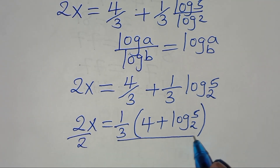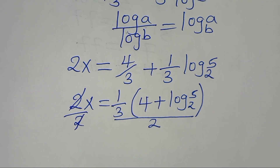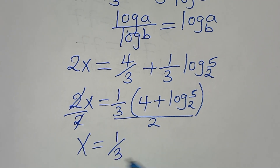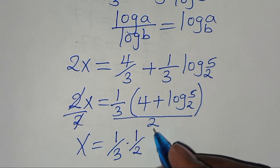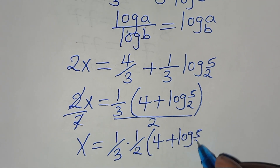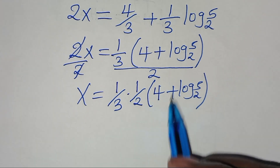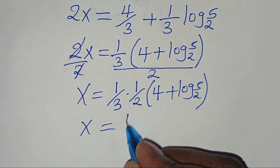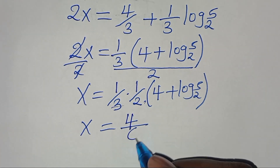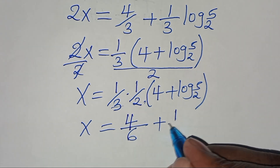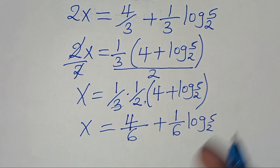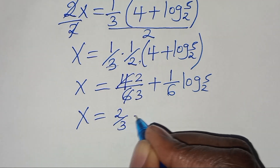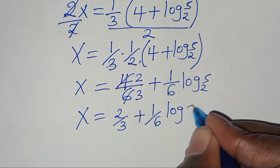Let's divide both sides by 2, so x equals (1 over 3) times (1 over 2) times (4 plus log base 2 of 5). This simplifies to x equals 4 over 6 plus (1 over 6) log base 2 of 5, which reduces to x equals 2 over 3 plus (1 over 6) log base 2 of 5.